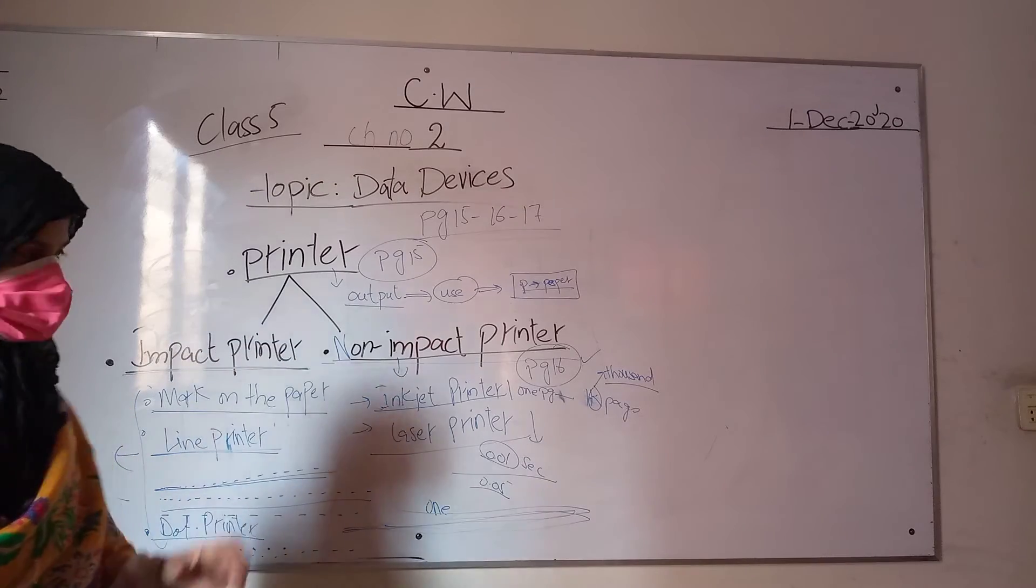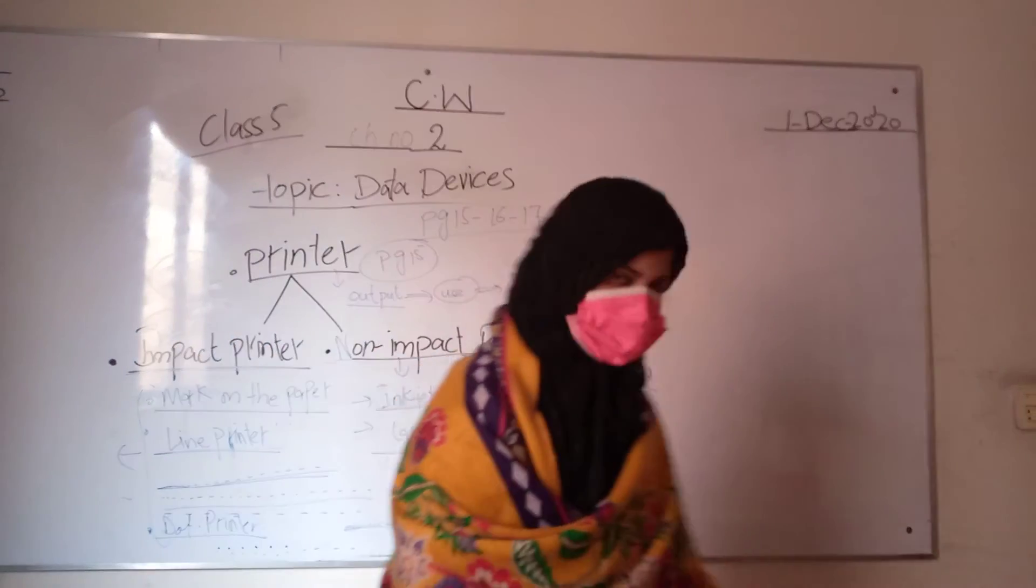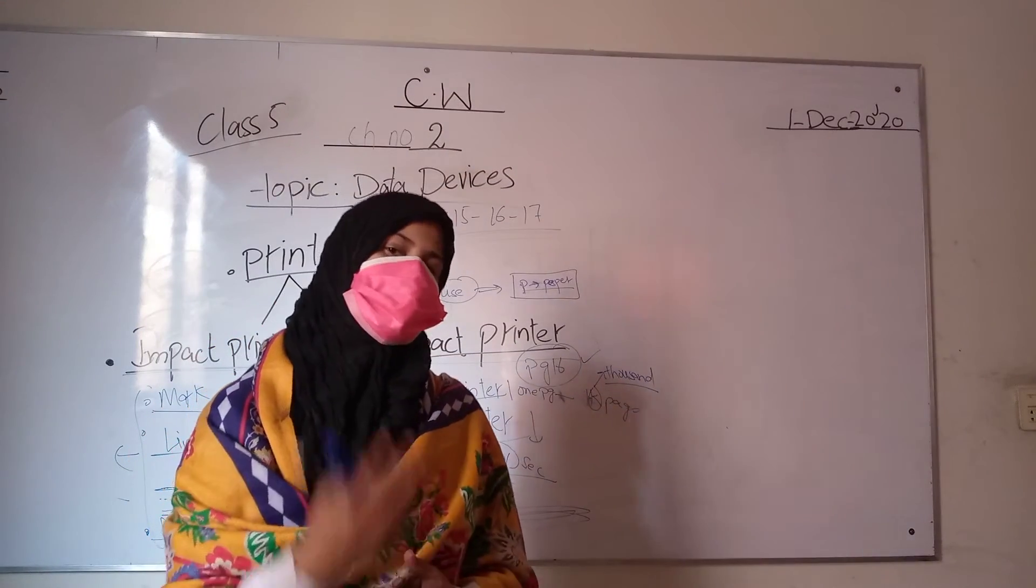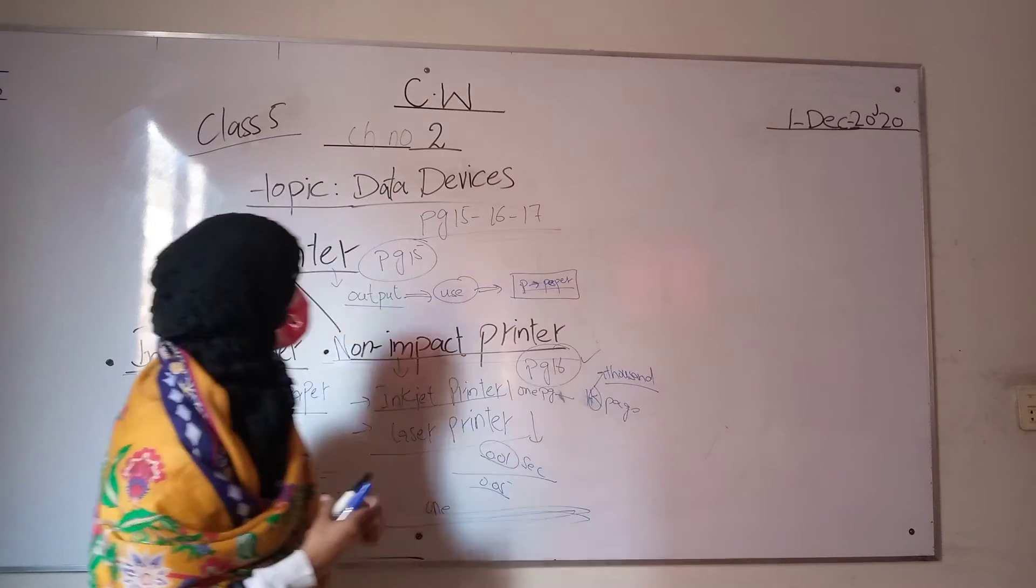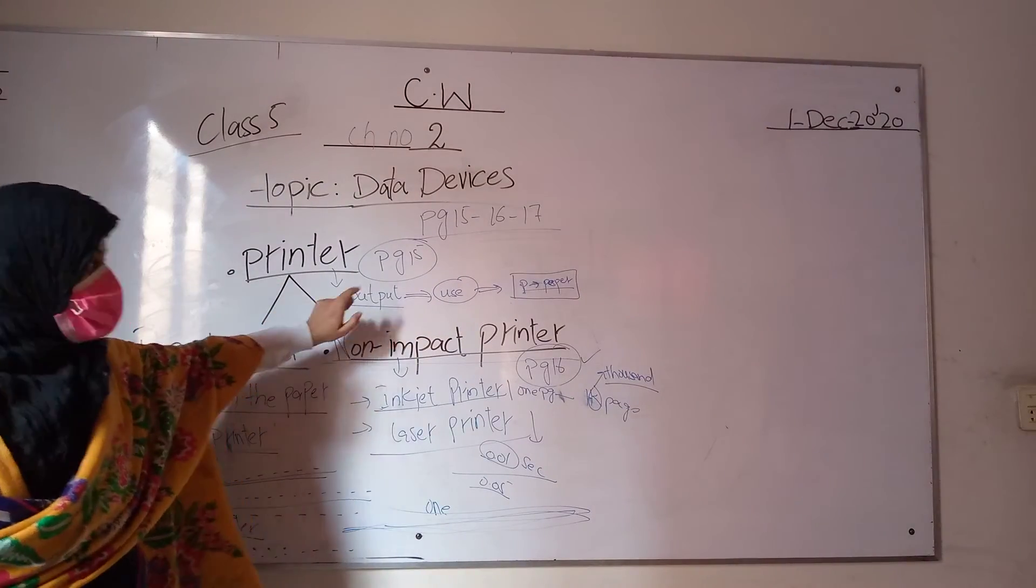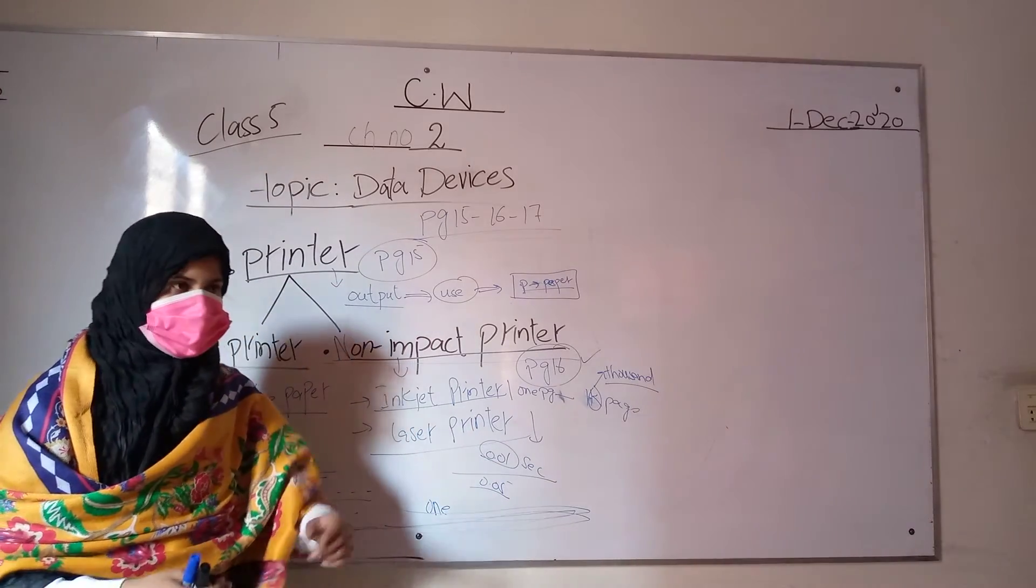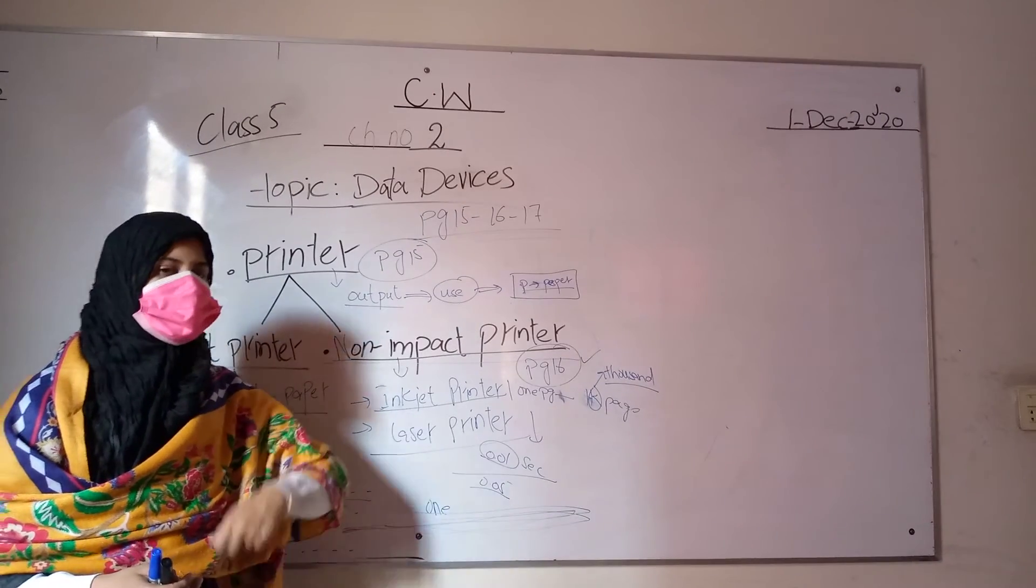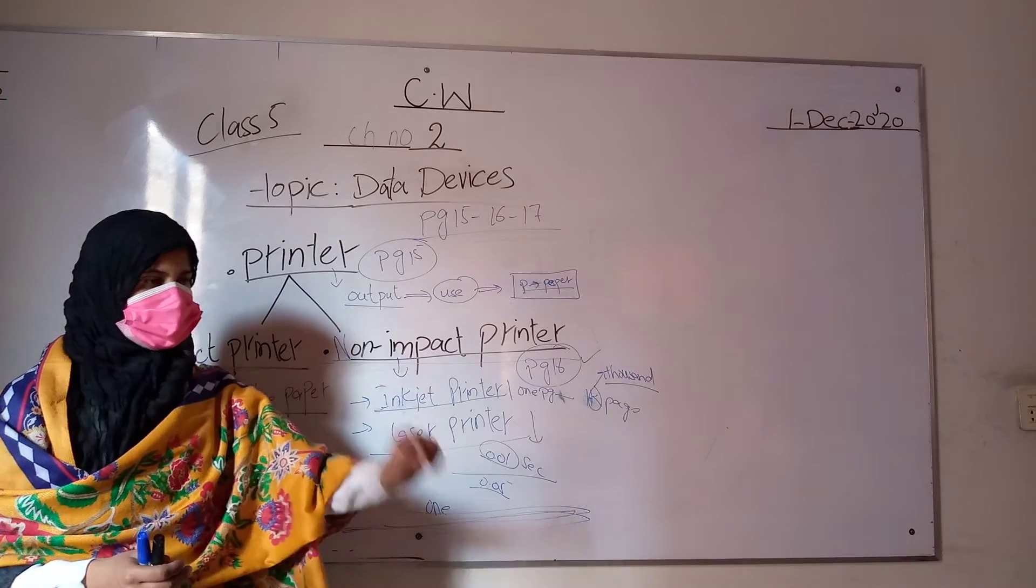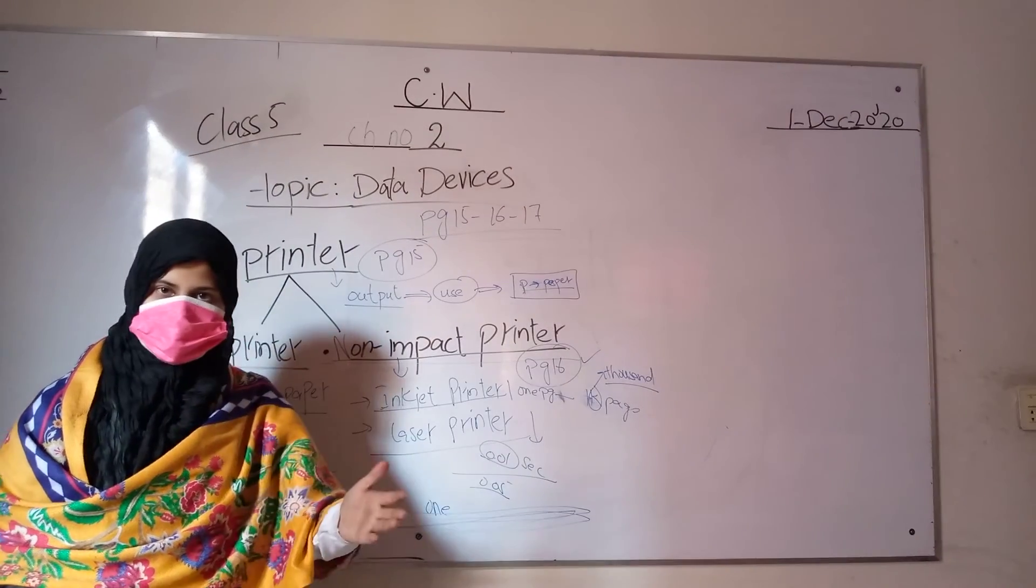To better understand: in previous lectures, I explained input devices and output devices. Input devices enter data, and output devices produce data. Printer is an output device. When you use a printer, you give it input data and paper, and it produces printed output.